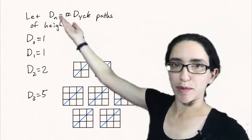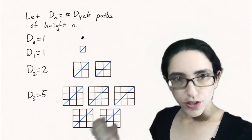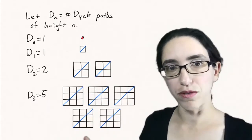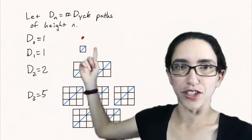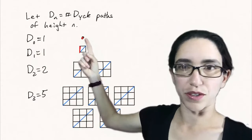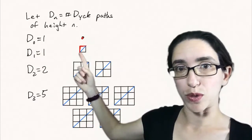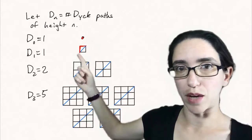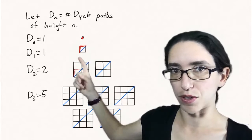Let's let D sub n be the number of Dyck paths of height n. We can calculate this number for some small values of n. For D sub 0, that's just 1 because you're going from (0,0) to itself. Similarly for D1 equals 1, you can't go to the right and up because that would be below the diagonal. So we only have one path that stays above the diagonal for the 1 by 1 square.